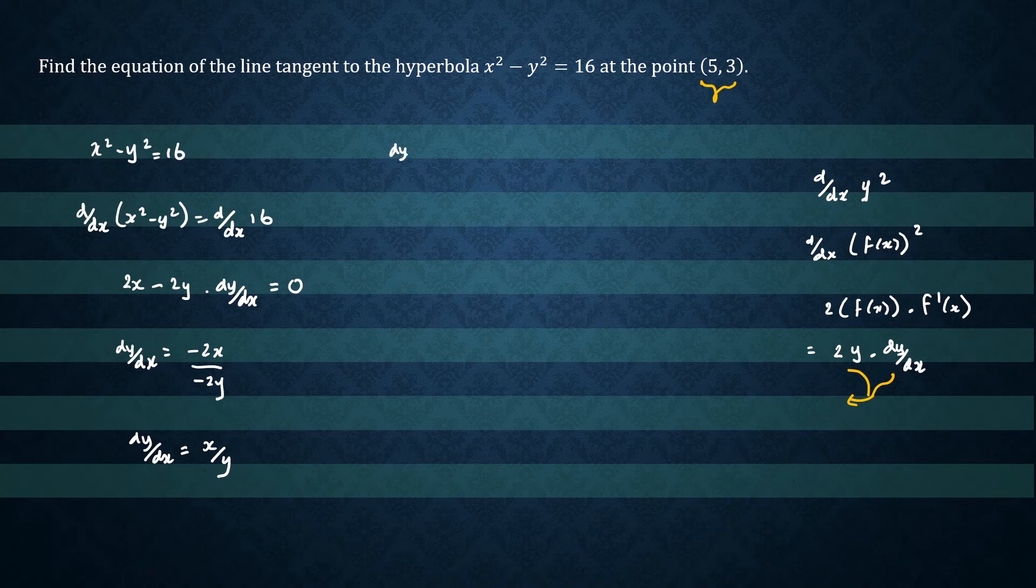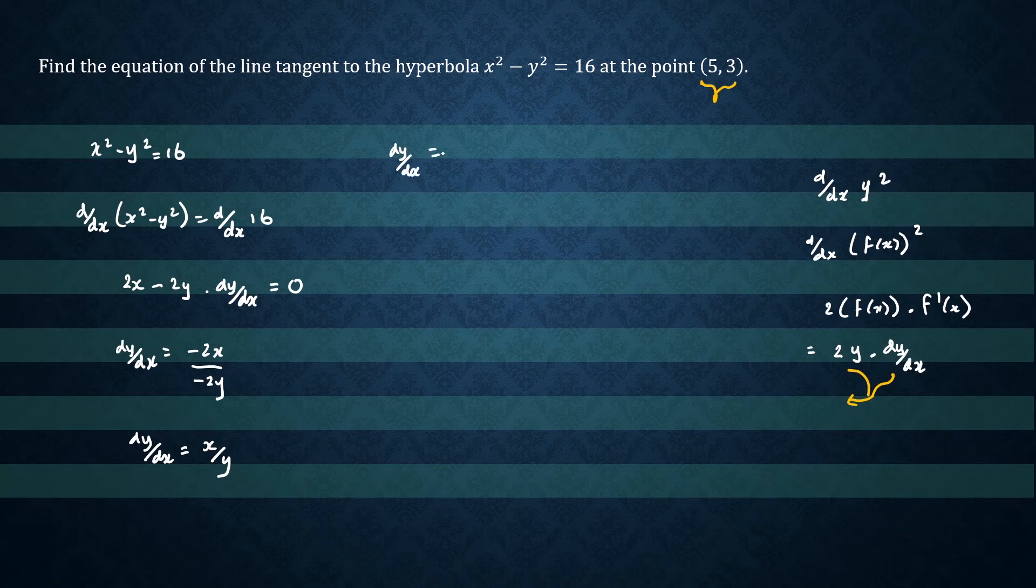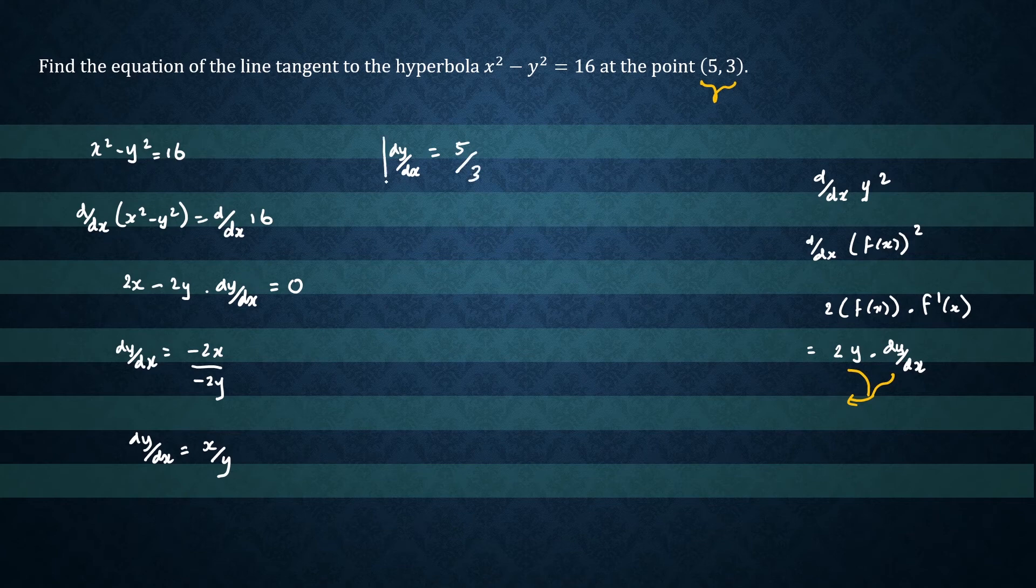So we would write dy/dx equals x, which is 5, and y, which is 3. So that's the slope at the point (5, 3), which is 5 over 3.